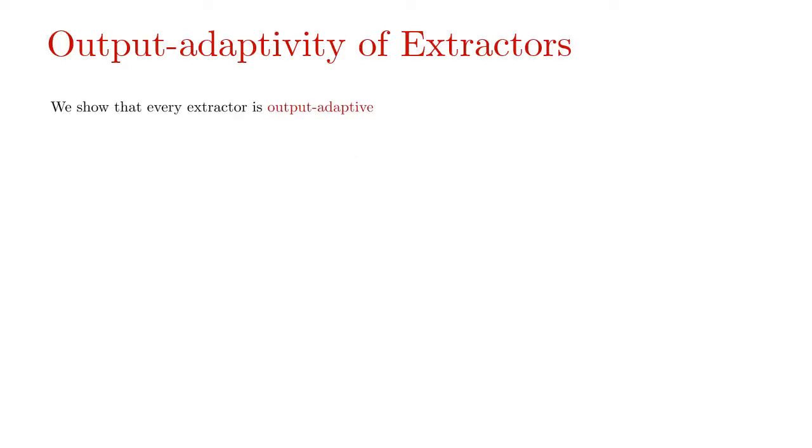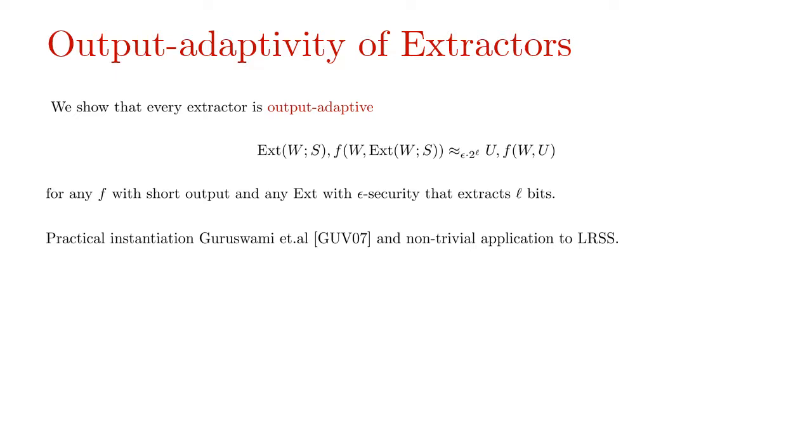In this result we show that every extractor is output adaptive by which we mean that the leakage on W can arbitrarily depend on the challenge. Formally the extractor output is indistinguishable from uniform even given the seed and any arbitrary short leakage dependent on the source and challenge. Strictly speaking we show that any extractor that extracts L bits and is epsilon secure is an epsilon into 2 power L output adaptive extractor. Though this may seem like huge loss in the security, we show a practical instantiation using the GUV extractor and also demonstrate a non-trivial application like LRSS to prove the strength of output adaptive extractors.